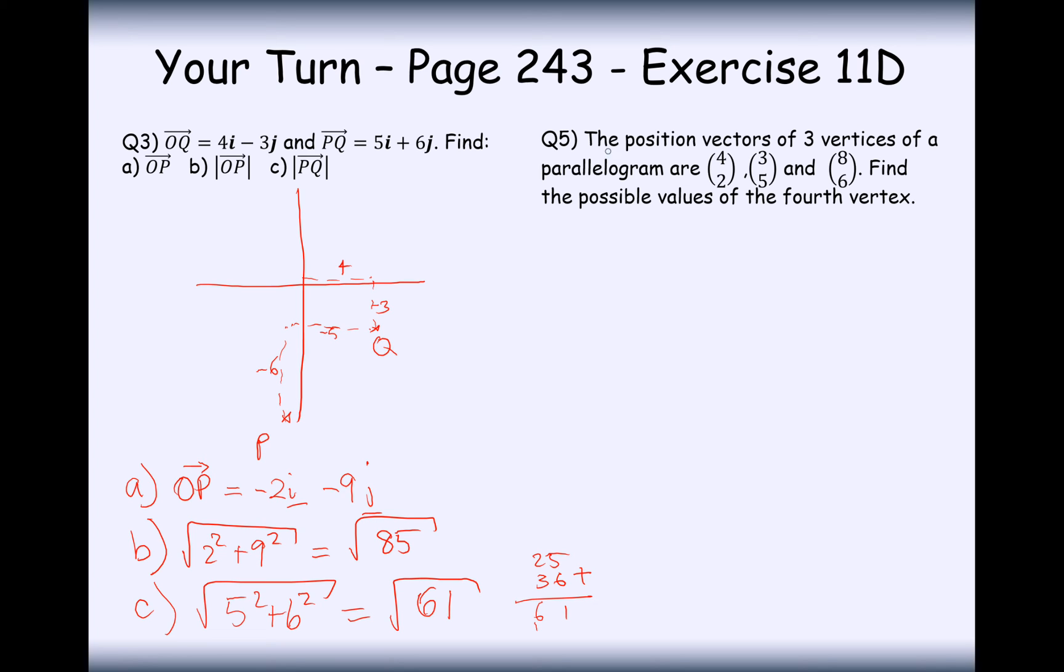The next question here. The position vectors of three vertices in a parallelogram are 4, 2, 3, 5 and 8, 6. Find the possible values of the fourth vertex. Now that's a cracking question.